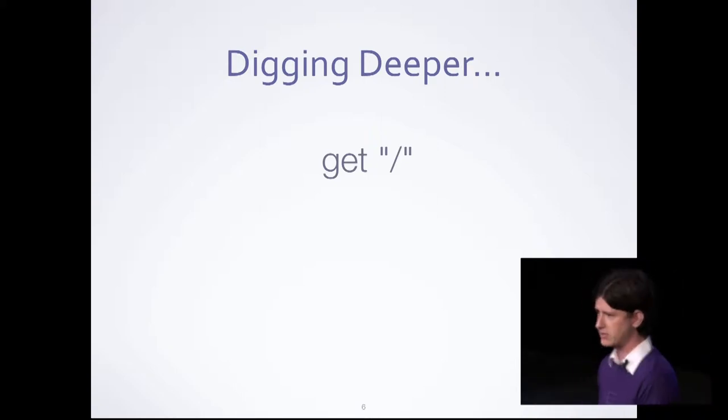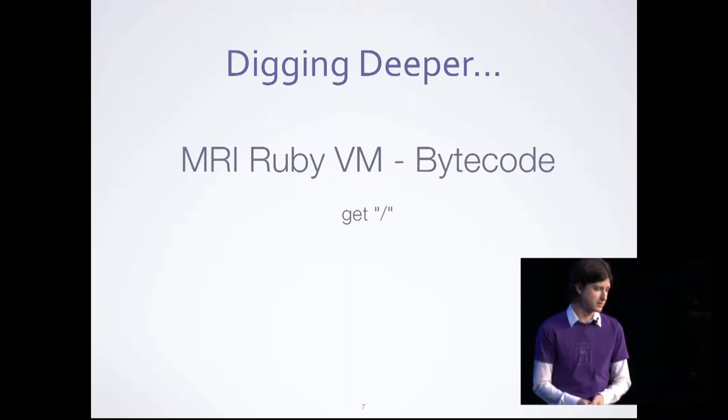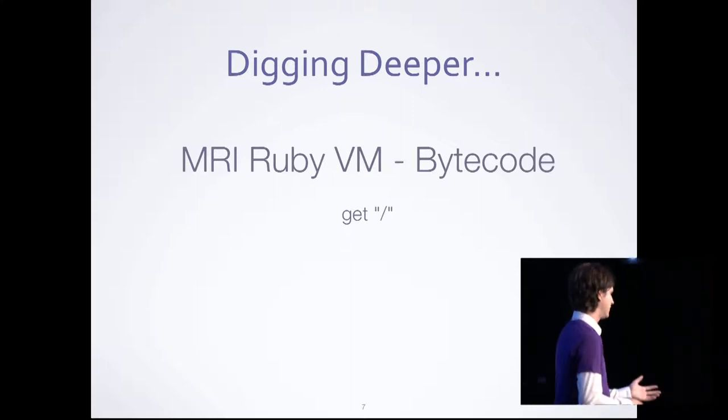Let's dig deeper and look at the interactions at play for your application. With a simple Sinatra request, one of the first spaces it runs in is your language virtual machine — in this case, the MRI Ruby virtual machine. Something parses your code, that Ruby code turns into bytecode, and the Ruby interpreter uses that bytecode and turns it into system calls. The Ruby interpreter starts setting up a bunch of rules that you, the programmer, can use.